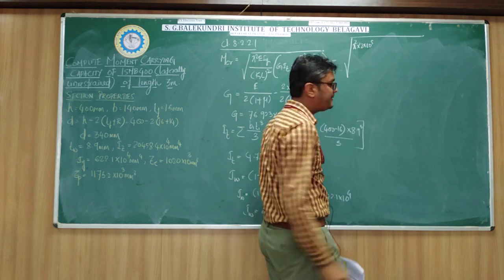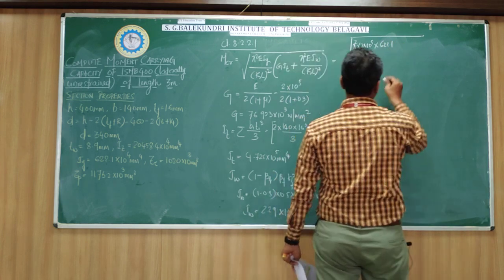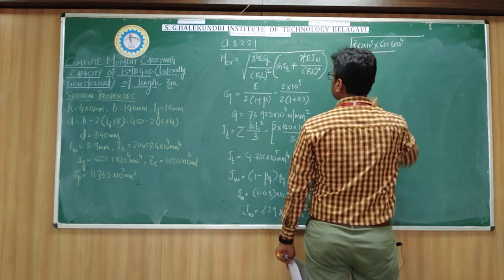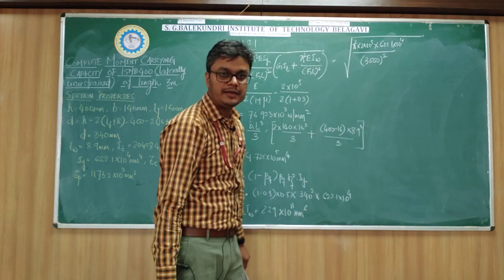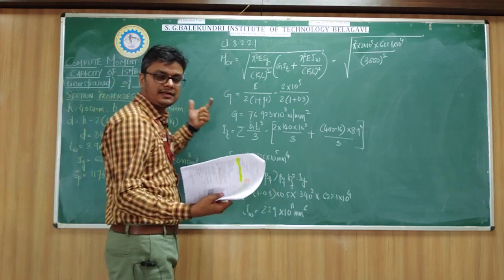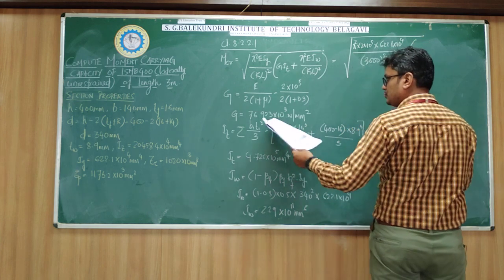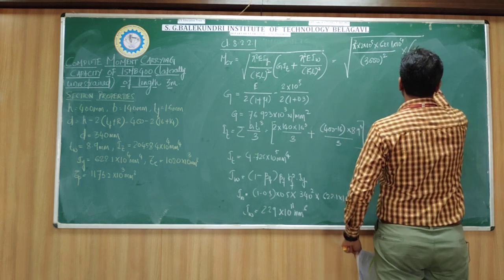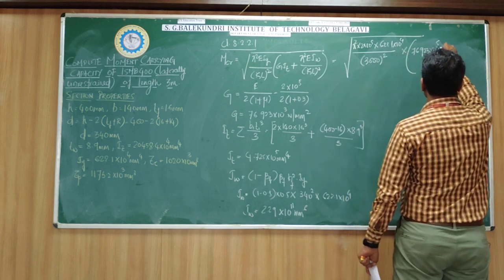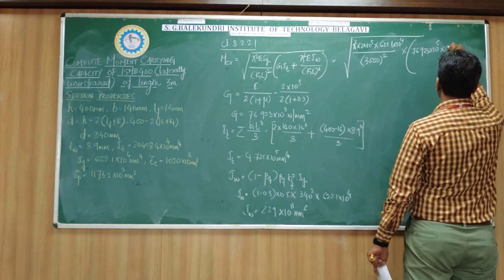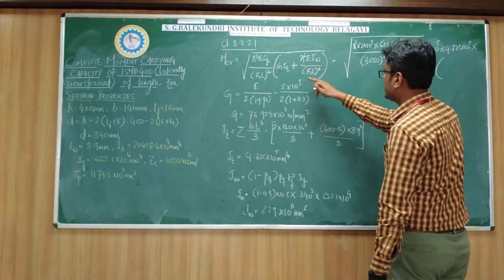So π² × 2×10⁵ × Iy which is 622.1×10⁴, divided by KL squared. Regarding KL, I am taking the effective length of the beam as 3 meters itself, assuming the beam is simply supported. This multiplied by G, so G is 76.923×10³, multiplied by IT, the torsional constant which is 4.725×10⁵.